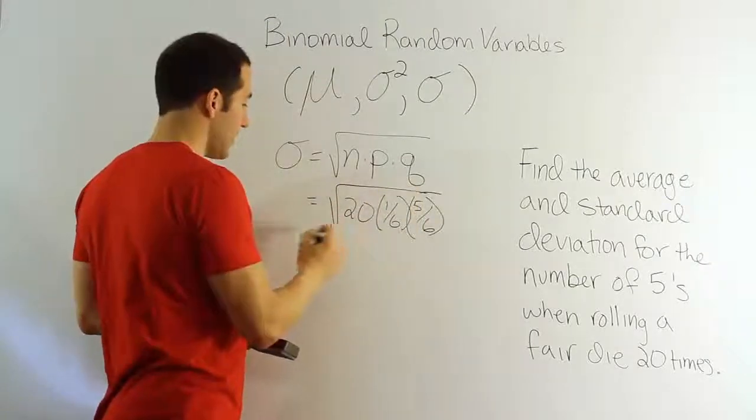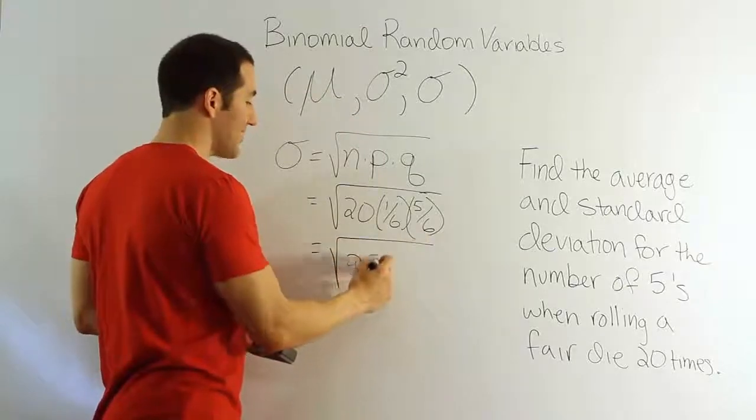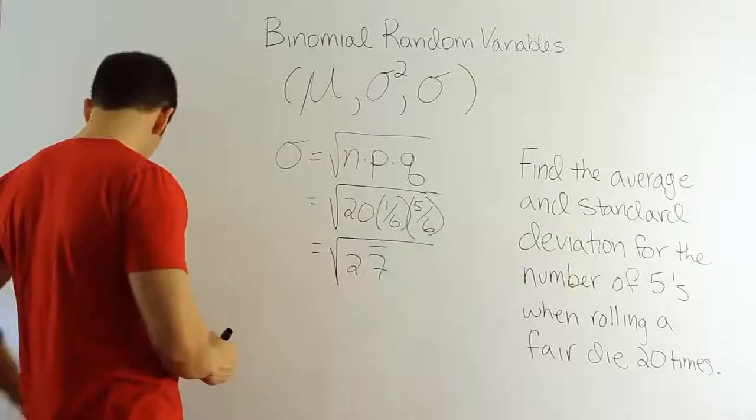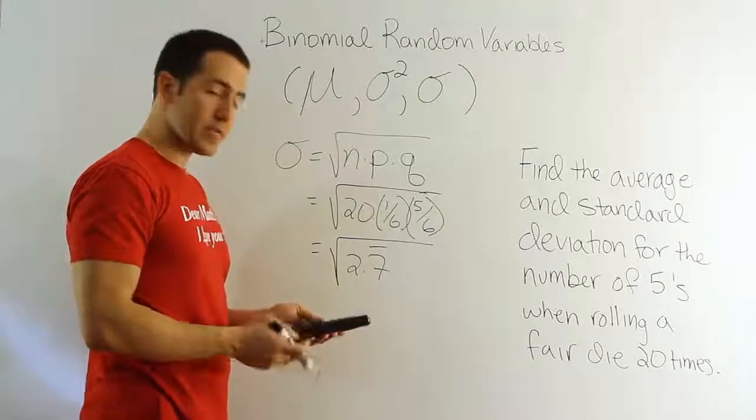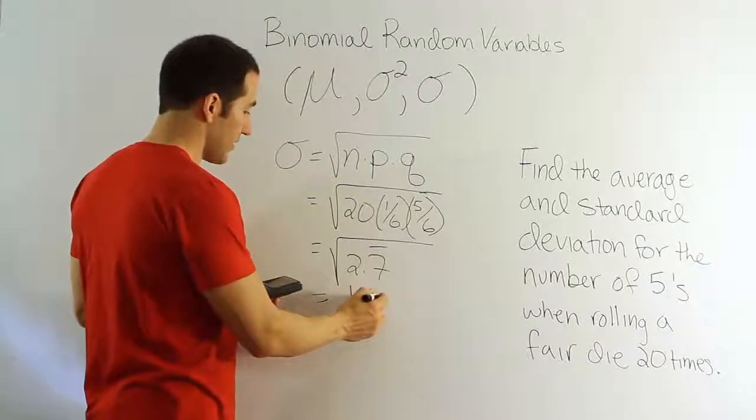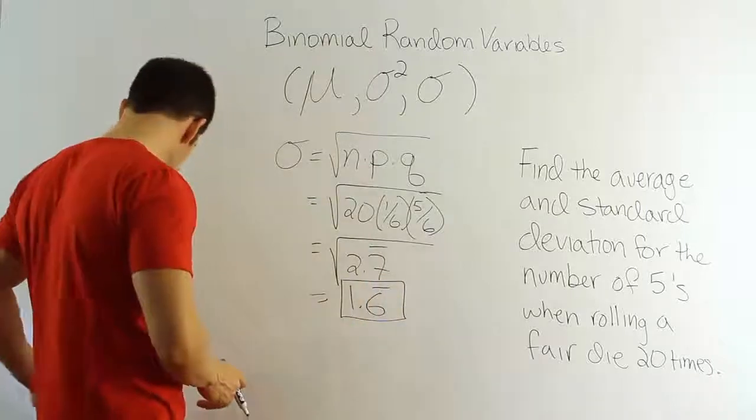And then, of course, when you take the square root or do the multiplication, we already saw that that's 2.7 repeating. And if we take the square root of that, raising it to the half power or taking the square root, it's the same thing, we get the answer 1.6 repeating. So that is our standard deviation, 1.6 repeating.